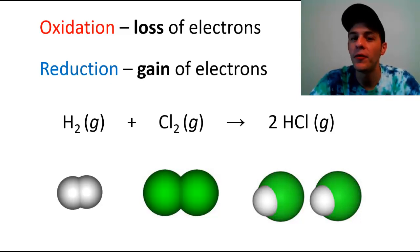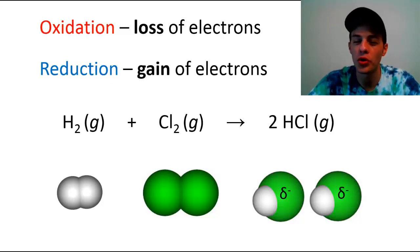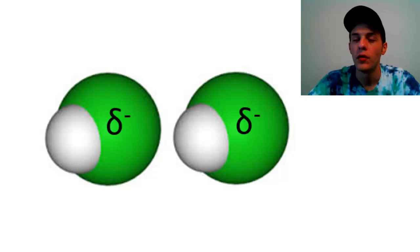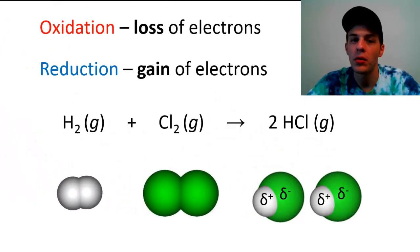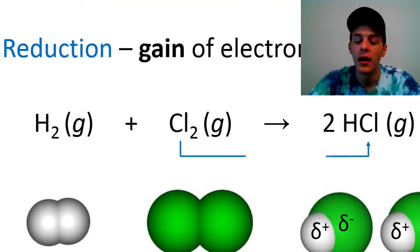The electrons being shared between the hydrogen and chlorine are not being shared equally. Chlorine has a greater tendency to attract electrons to itself than hydrogen does. Therefore, since chlorine is hogging up more of the electron density within that single covalent bond, chlorine acquires a partial negative charge (δ−). That leaves hydrogen with a lack of electron density, so hydrogen becomes partially positively charged (δ+). Chlorine has essentially gained electron density, so we say chlorine has undergone reduction.